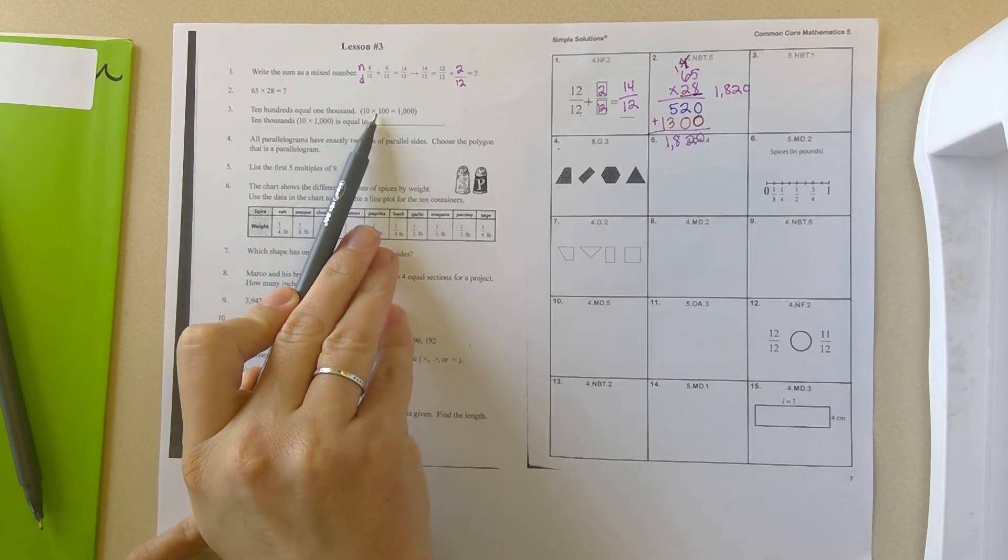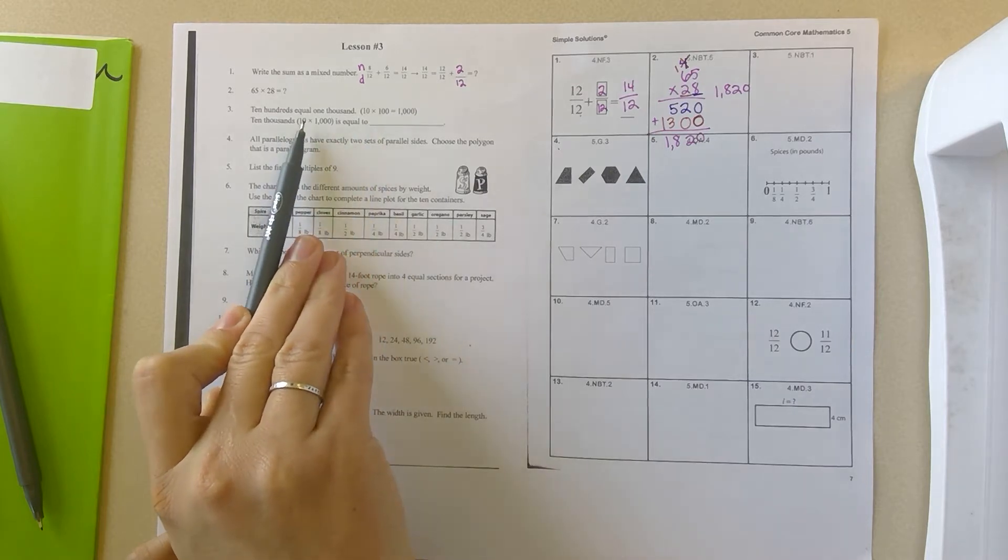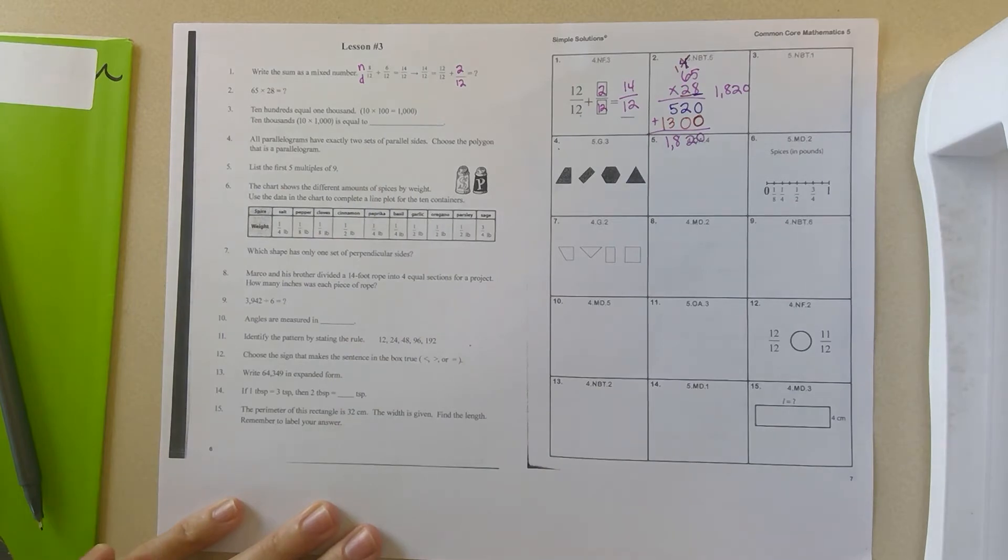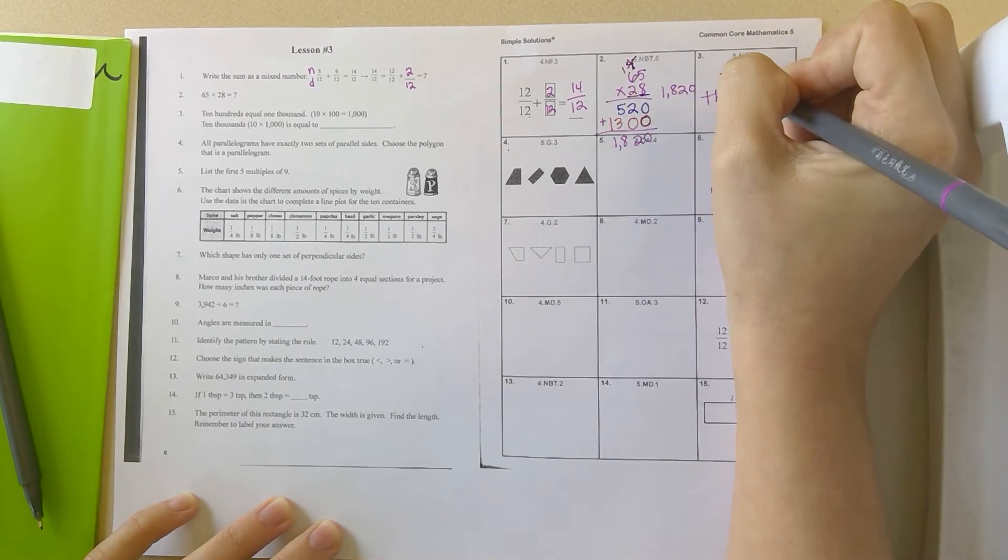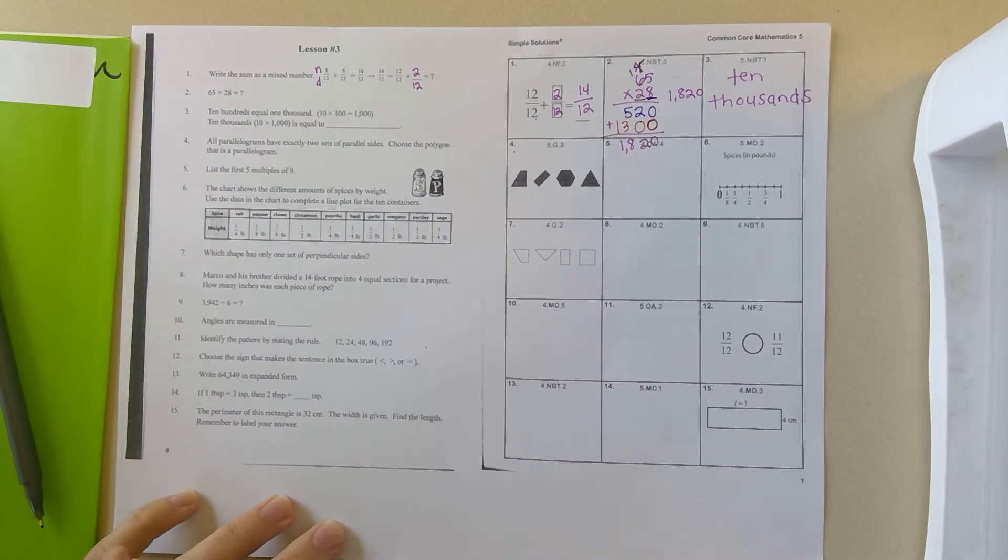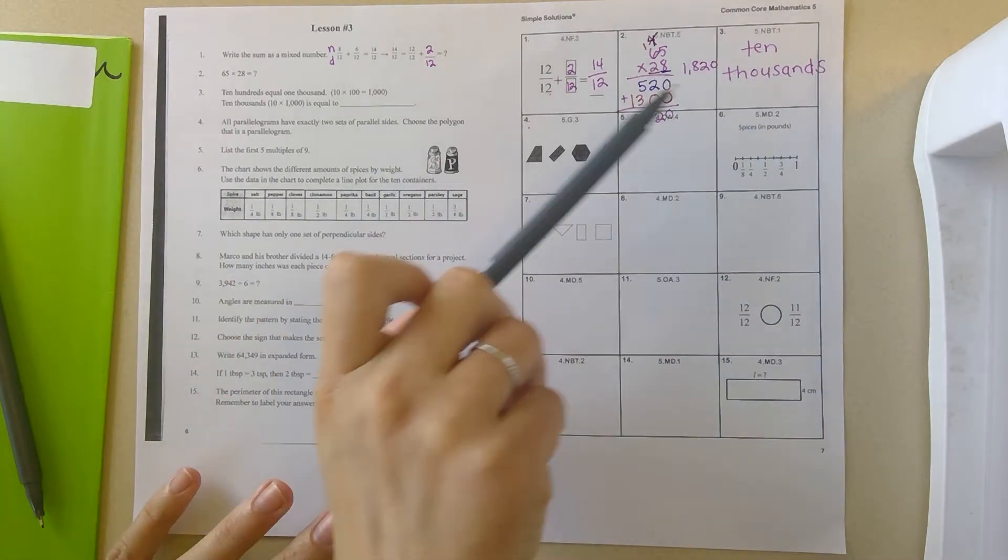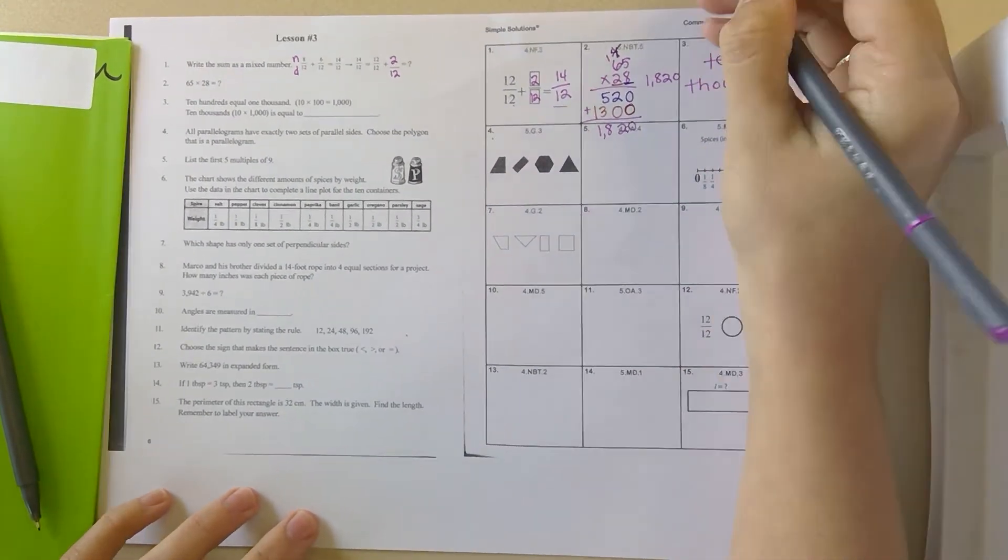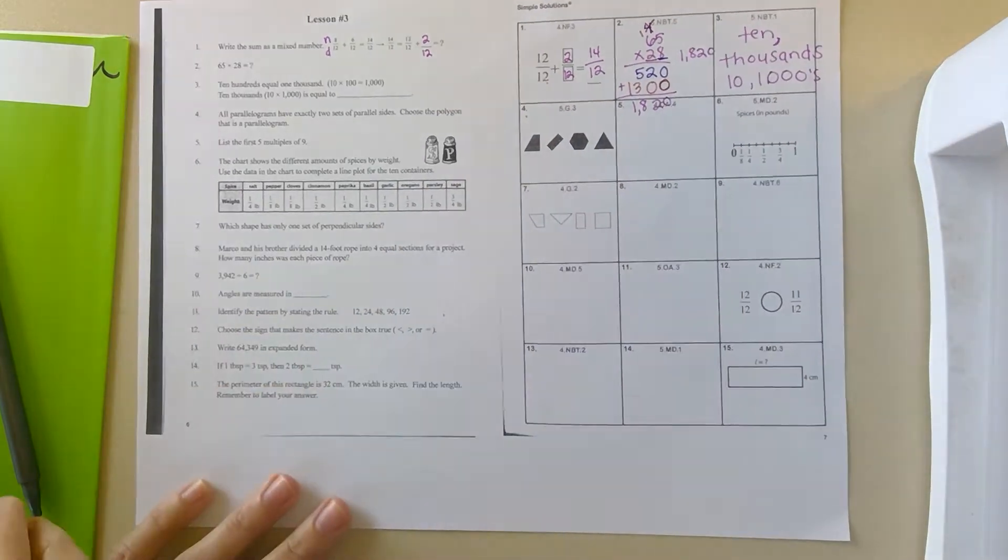Number 3, 10 hundreds equals 1,000. So 10 times 100 is 1,000. 10 thousands is equal to what? 10 times 1,000. 10 thousands is equal to 10 thousands. So we'll just put 10 thousands. That sounds a little wonky because it's saying 10 thousands equal to. I guess I should probably put a comma here. So it's talking about 10 thousands.